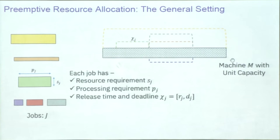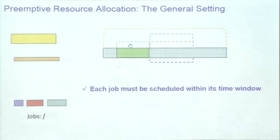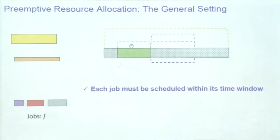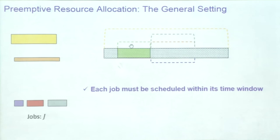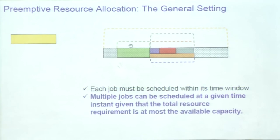Now let me show you what a feasible allocation or feasible schedule would look like. The first constraint is that every job has to be scheduled within its time window. For instance, I schedule this green job within its time window. You can actually schedule multiple jobs — the yellow, orange, red, purple, and gray one — as long as the resource constraints are not violated. At any instant in time, if the total amount of resources required by all the jobs scheduled at that instant is less than the resources available, then it's a feasible schedule. This gives you more flexibility to schedule more jobs, but you should respect the resource constraints.